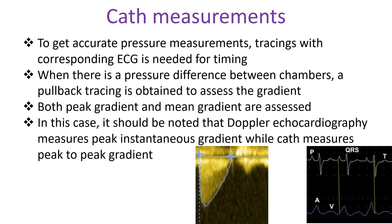To get accurate pressure measurements, tracings with corresponding ECG are needed for timing. When there is a pressure difference between chambers, a pullback tracing is obtained to assess the gradient. Both peak gradient and mean gradient are assessed. It should be noted that Doppler echocardiography measures peak instantaneous gradient while cath measures peak-to-peak gradient.